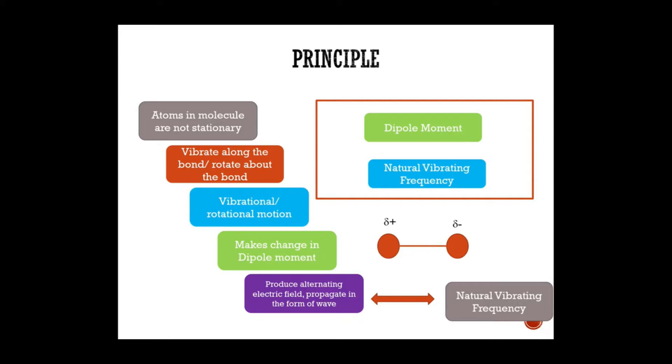The net transfer of energy from radiation to the molecule takes place. This results in the change in the amplitude of the molecular vibration, and so the molecule absorbs the IR radiation and produces an absorption band on the IR spectrum.